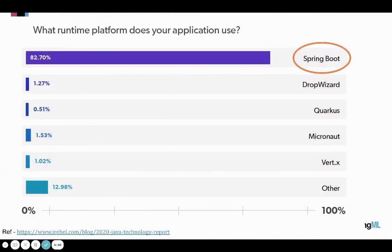First, what is Spring Boot? Spring Boot is a Java-based framework that is widely used, as you can see from this J-Rebel survey results. Almost 83% of Java developers use the Spring Boot framework to build applications. It's been around for almost 20 years now, and a lot of large enterprises use this framework to build and deploy their Java applications in production.